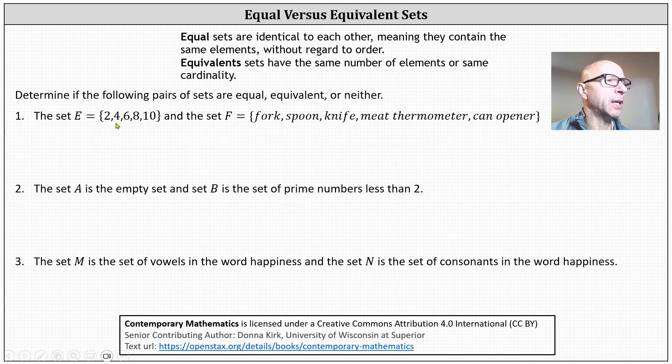However, set E contains five elements. Set F contains five elements, indicating the cardinality of both are equal to five. And because of this, we say set E is equivalent to set F.